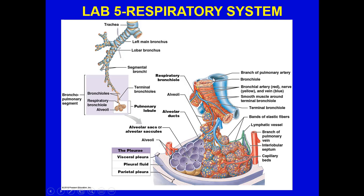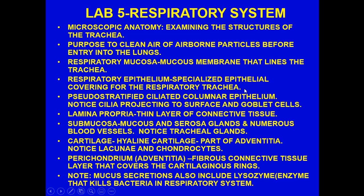Notice closely associated structures: branches of the pulmonary artery deliver deoxygenated blood into the capillary beds intimately surrounding the alveoli, where gas exchange occurs. Blood leaves through branches of the pulmonary vein fully oxygenated. Lymphatic vessels are also present here, with major lymphatics exiting through the hilum.